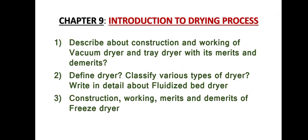Chapter nine: Introduction to Drying Process. Question one: Describe construction and working of vacuum dryer and tray dryer with their merits and demerits. Question two: Define dryer, classify various types of dryer, and write in detail about fluidized bed dryer. Question three: Construction, working, merits and demerits of freeze dryer. These are the important questions in chapter nine.